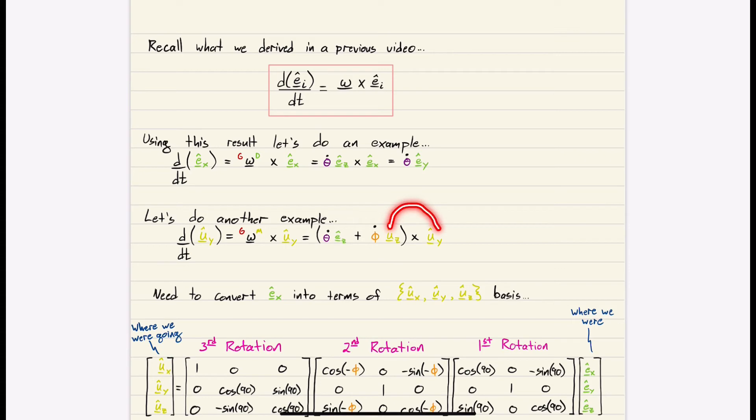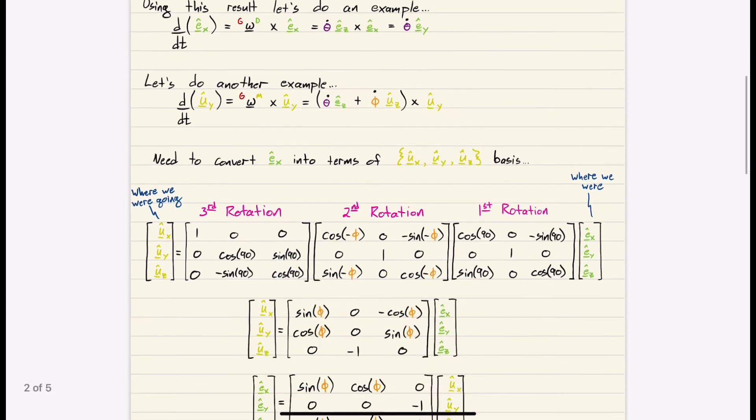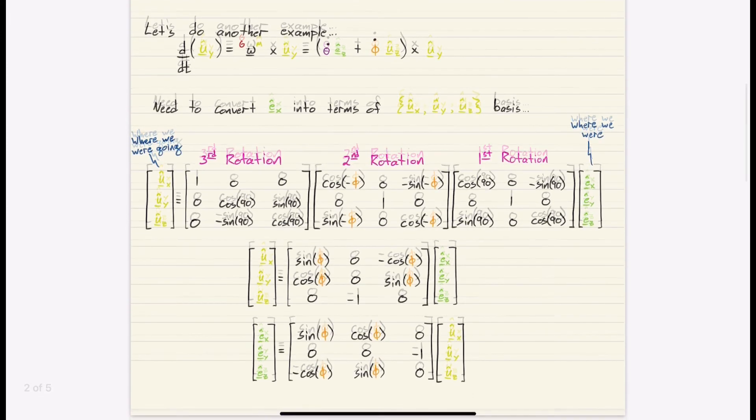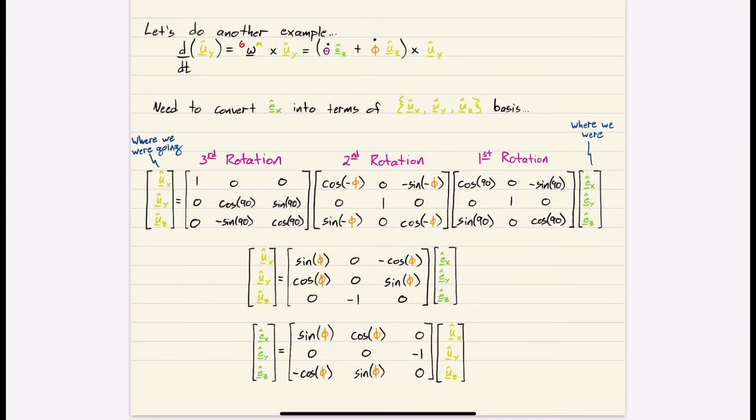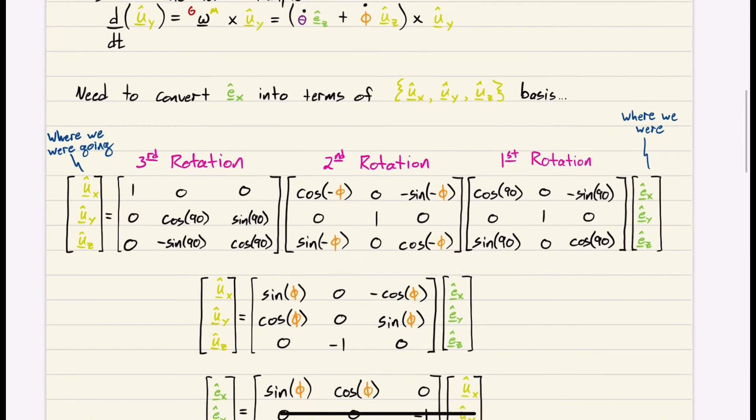Well, we can do this cross product fine. We can do EZ cross with UY. But we cannot do EZ cross with UY. Well, that's okay, because we know how to convert between different bases. We did that in our DCM video. So what are the rotations we need to perform to get from where we were, which is the green base, to where we want to go, which is our yellow basis.